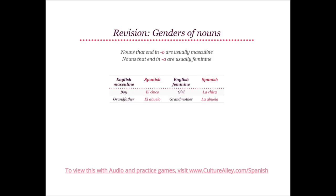Do you remember that nouns that end in O are usually masculine, while nouns that end in A are usually feminine? For example, boy translates to el chico. Looking at the feminine form, girl is translated as la chica. Let's take another example: grandfather becomes el abuelo, and grandmother will be la abuela. Notice how masculine forms are ending in O and feminine in A.